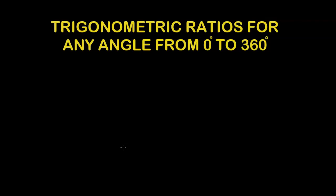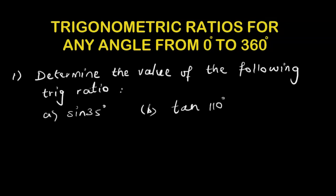In this lesson we would understand how to find the trigonometric ratios for any angle from 0 degrees to 360 degrees, or if we are given the ratio, how do we find out the angle from 0 degrees to 360 degrees. Here we would not specifically talk about special angles — it could be any angle.